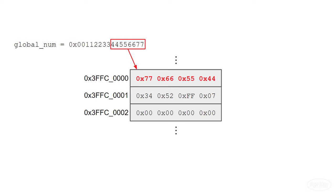Ideally, it would save the second half next in the following memory address. But let's say that at this moment, task B interrupts us and reads the 64-bit number from memory. This 64-bit global variable is not thread-safe, as we can't guarantee it will be written or read without being interrupted by another task. When task B tries to read this number, half of it will be overwritten, giving us garbage data.